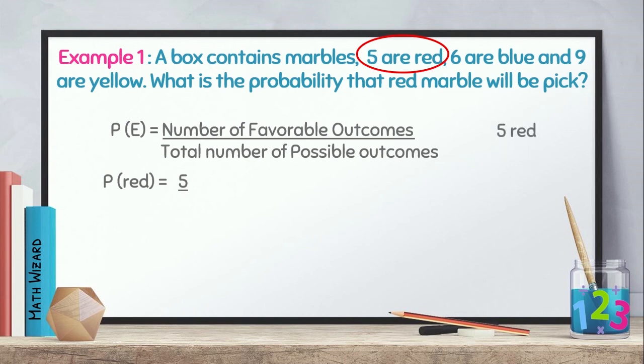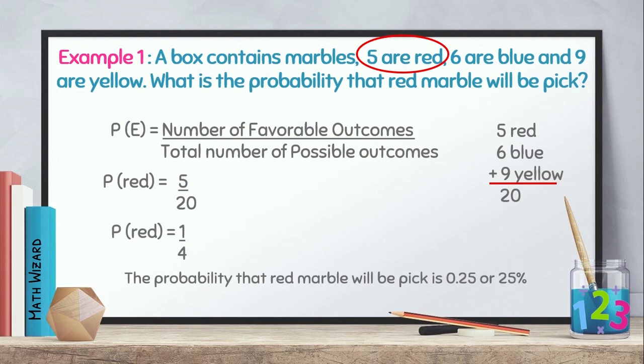Next, total number of possible outcomes. For us to identify the total number of possible outcomes, we need to add all the marbles in the box. So, we have 5 red, 6 blue, 9 are yellow. Therefore, we add them all together. We have 20. So, the total number of possible outcomes is 20. Reduce this to lowest term. Therefore, the probability that red marble will be picked is 1/4, 25 or 25%.